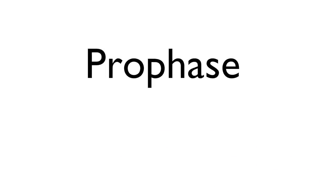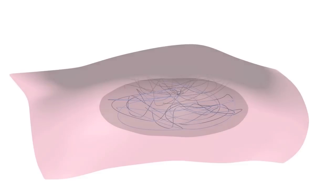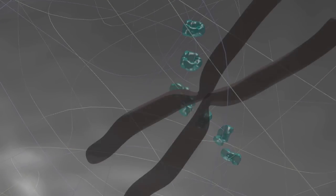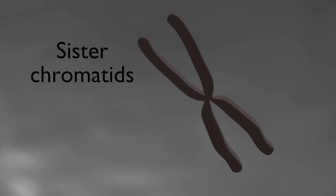In addition to replicating, chromosomes have to become more compact or condensed, so that they do not become entangled as they try to separate during chromosome segregation. Chromosome condensation begins during a stage called prophase. Remember that at this point each chromosome is composed of two sister chromatids that are attached to each other.